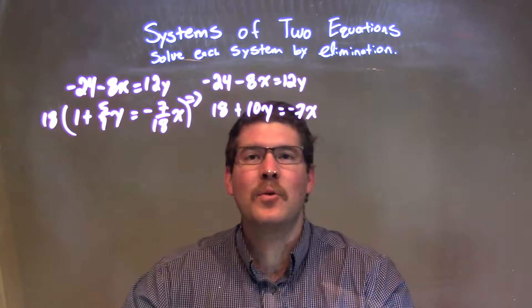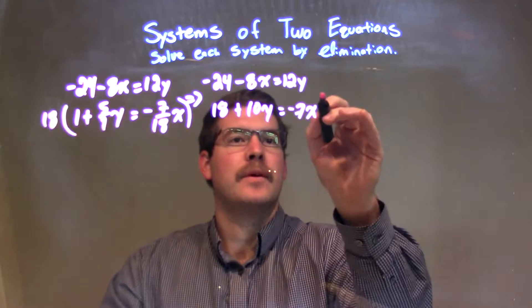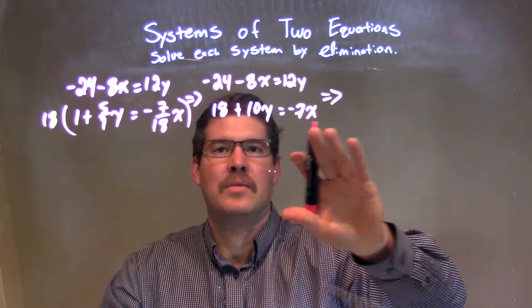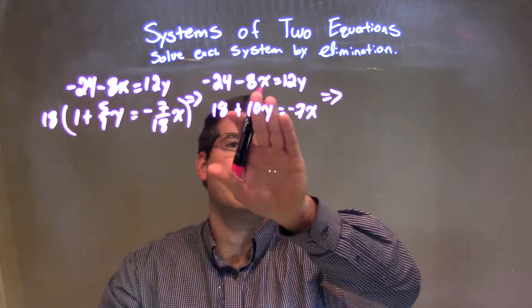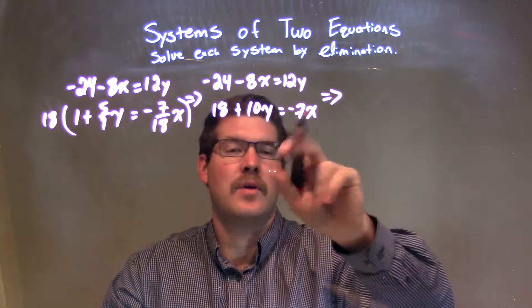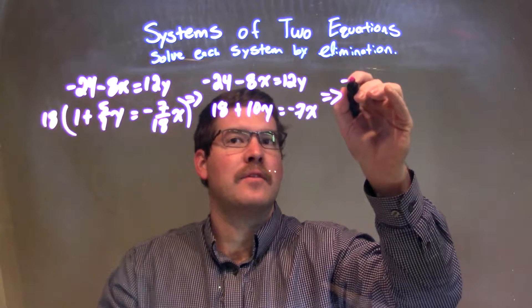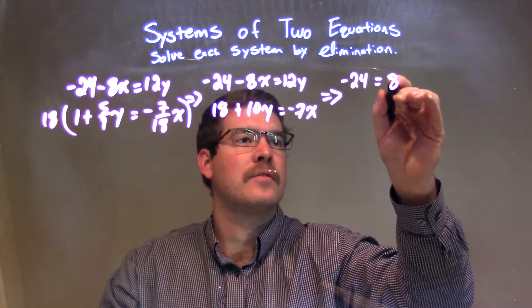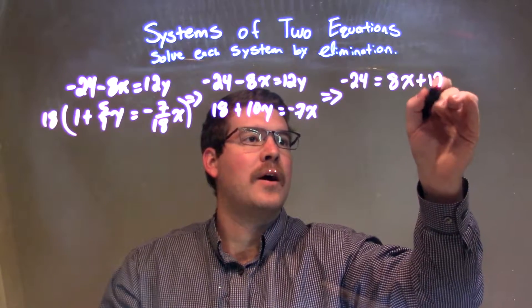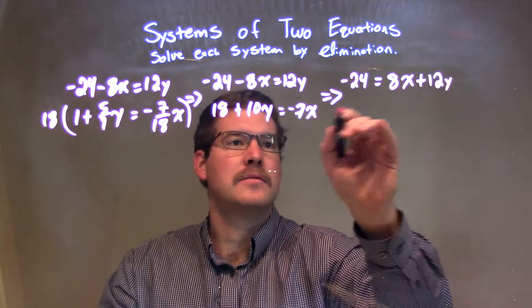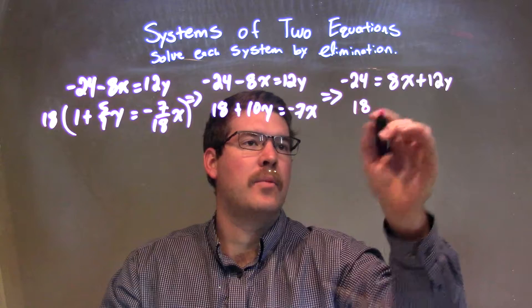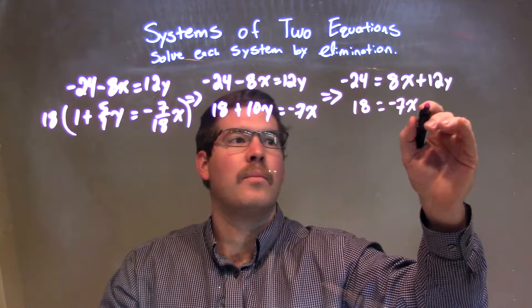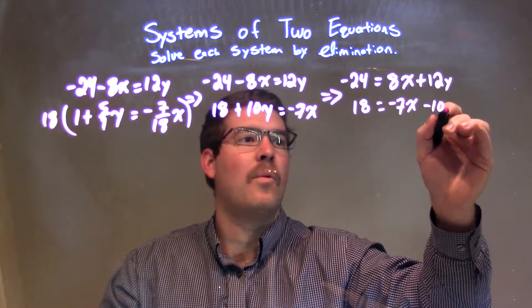Well, what I'm going to do now is I'm going to rewrite this one more time, rewrite it to have all the variables on the same side. So, I'm going to leave the numbers on the left-hand side, and add the 8x and subtract the 10y. So, we have a negative 24 still. That's going to be equal to a positive 8x plus 12y. And the second equation, just leave the 18 there, and I'm going to subtract the 10y to the side. It's leaving me with a negative 7x minus 10y.